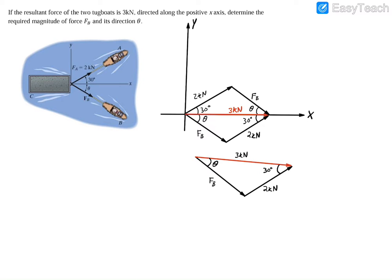So I can actually just use the law of cosines here to find force FB. So we'll have that force FB equals the square root of two squared plus three squared minus two times two times three times the cosine of 30 degrees, because that's the opposite angle of our unknown force FB.